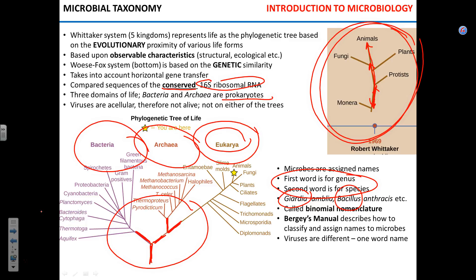The take-home message: you need to understand binomial nomenclature — genus and species — and the two different classification systems, what they're based on, and five kingdoms versus three domains.